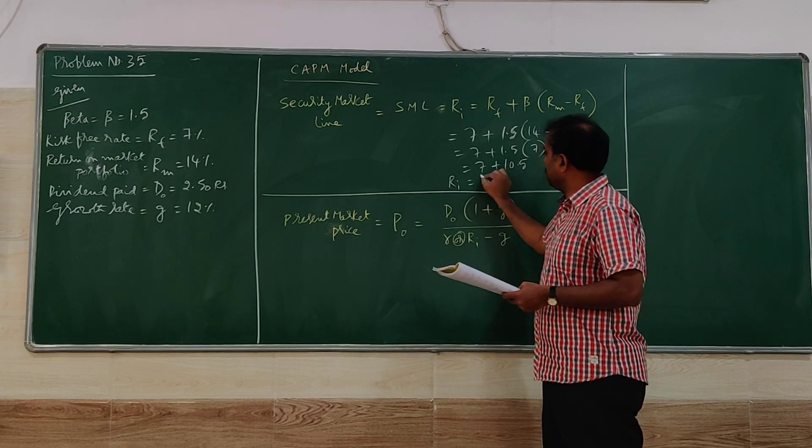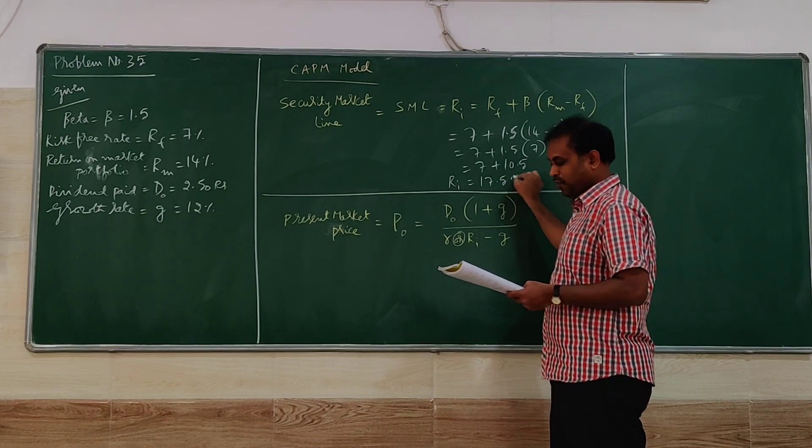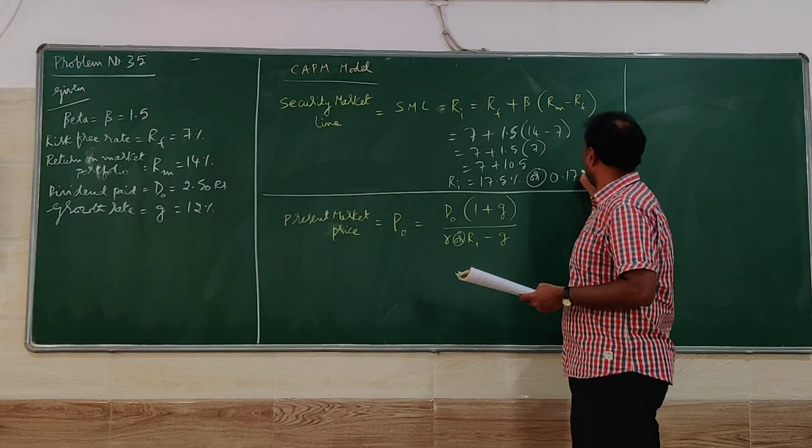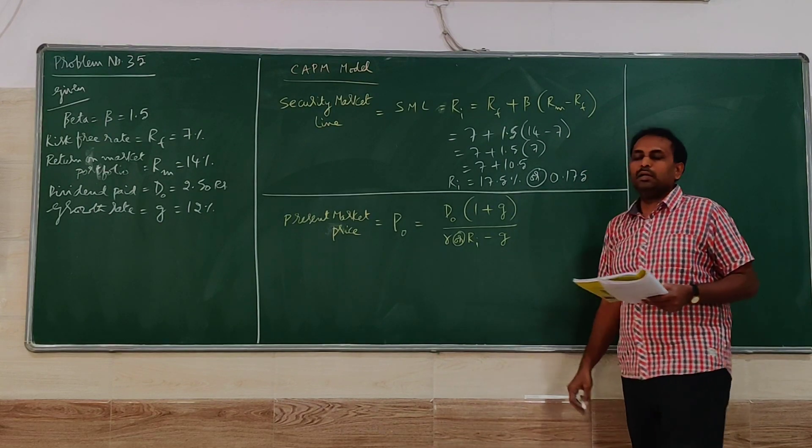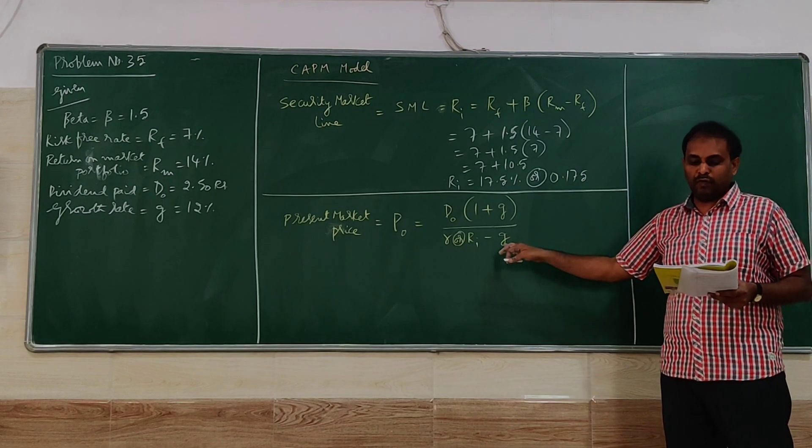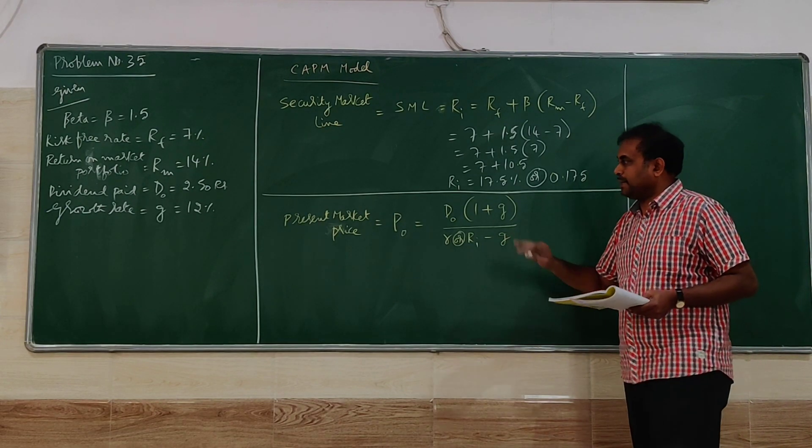So RI is equal to 17.5% or if it is in decimals, 0.175. So this will be used for calculation of the present market price.